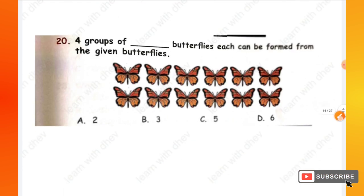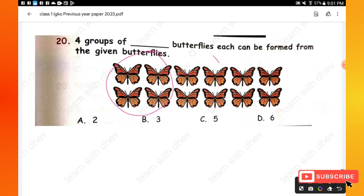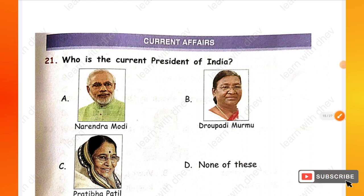Question 20: Four groups of butterflies — how many groups can be formed from the given butterflies? Three groups can be formed, so option B is the right one. The second section is Current Affairs — you will have a total of five questions.